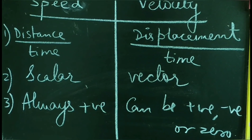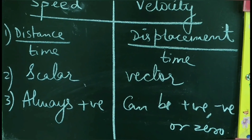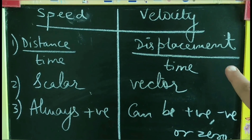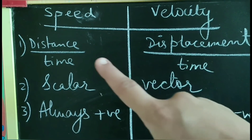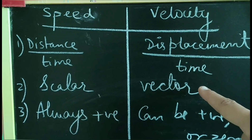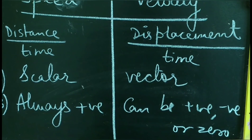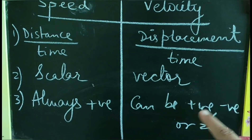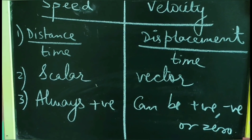Similar to distance and displacement, let us differentiate between speed and velocity. Speed is distance upon time; velocity is displacement upon time. Since distance is a scalar, speed is also a scalar quantity. Since displacement is a vector, velocity is also a vector quantity. Speed is always positive, but velocity can be positive, negative, or zero — just as displacement can be positive, negative, or zero.